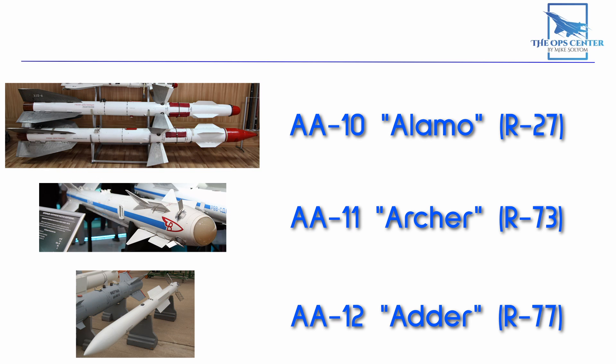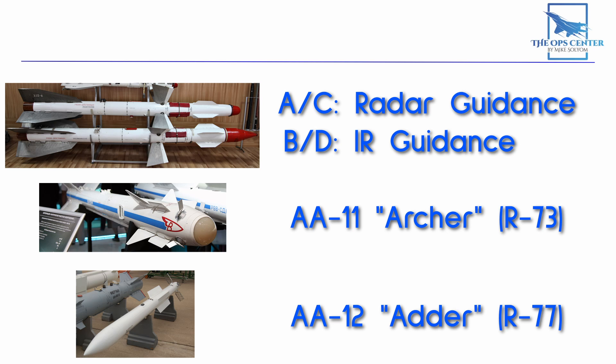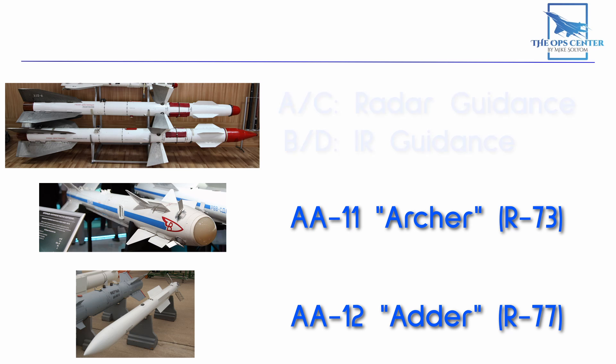The AA-10 actually comes in four sub-variants named A, B, C, and D by NATO. The A and C models are the radar-guided models. B and D actually use infrared seekers, so they would technically be FOX-2 missiles if they were used by NATO forces. The C and D are longer-range versions of their respective types.